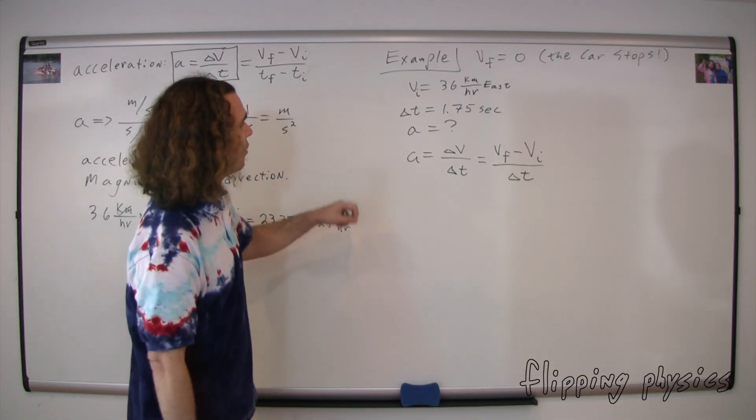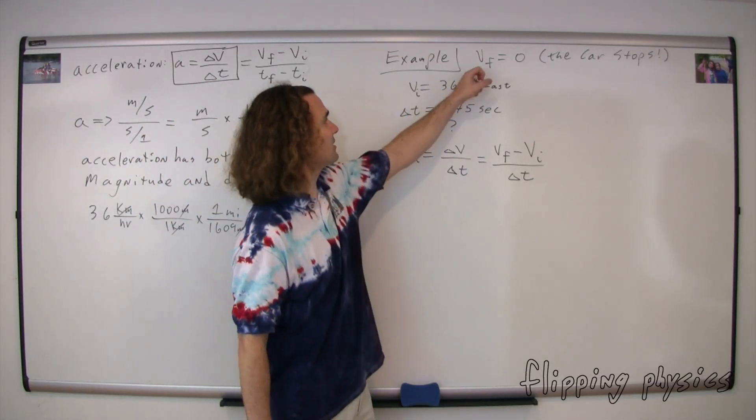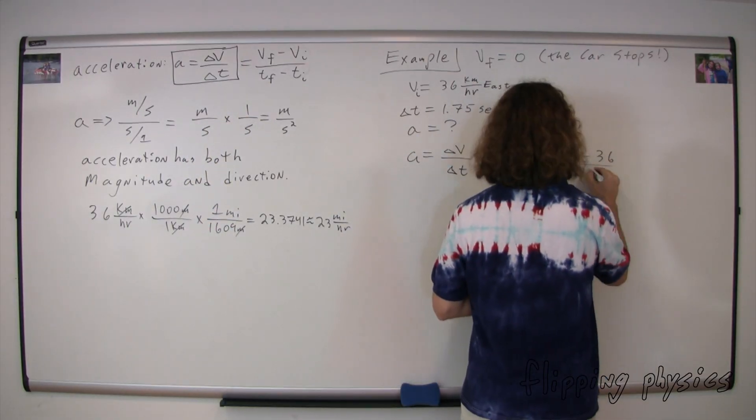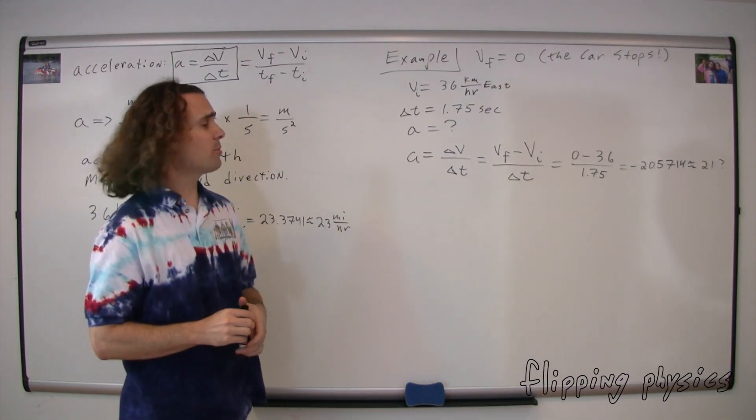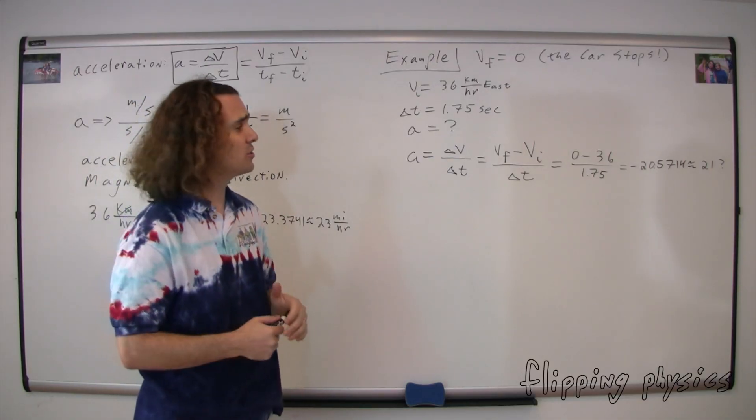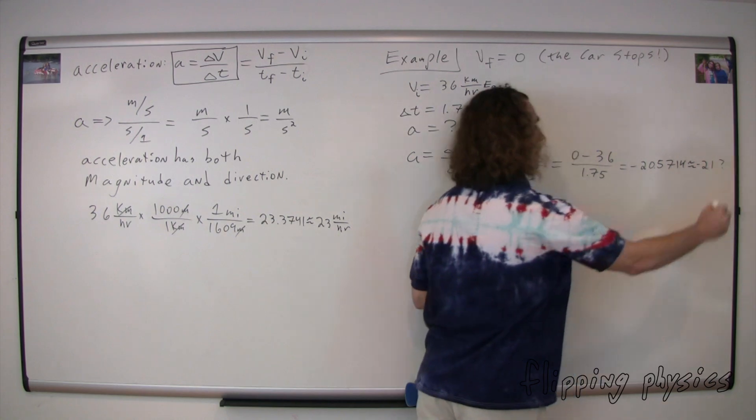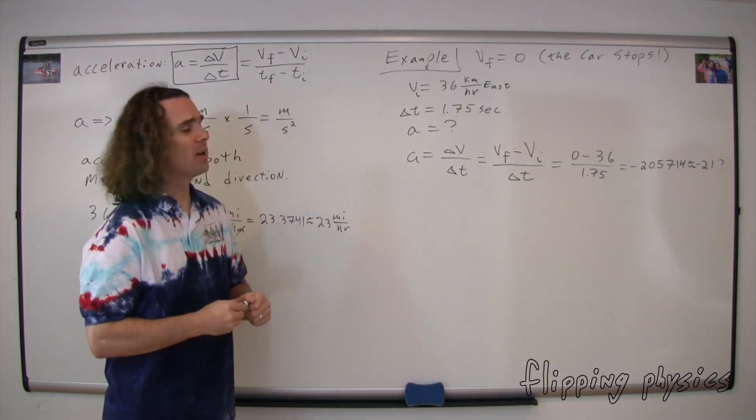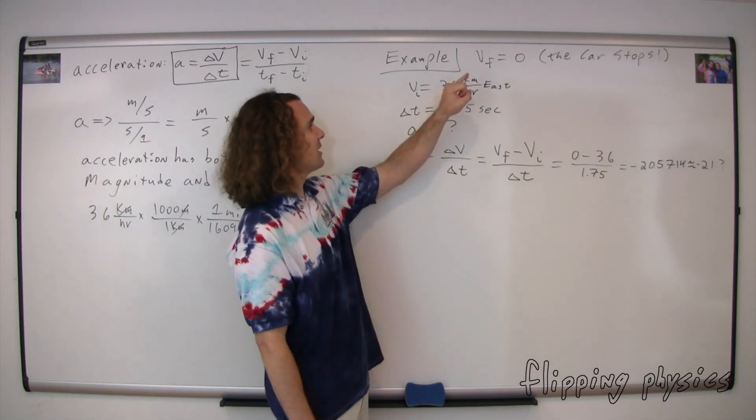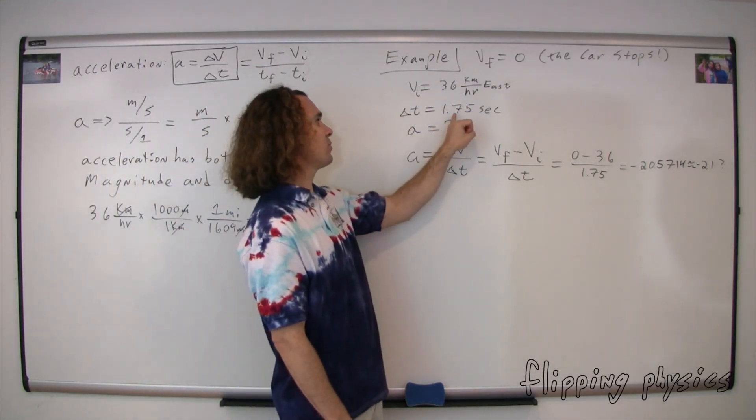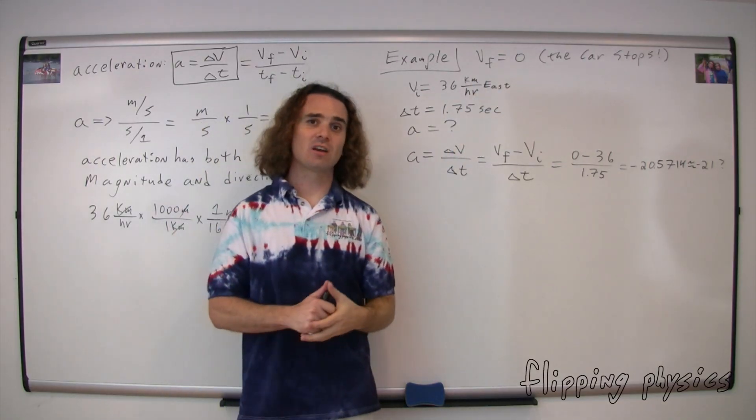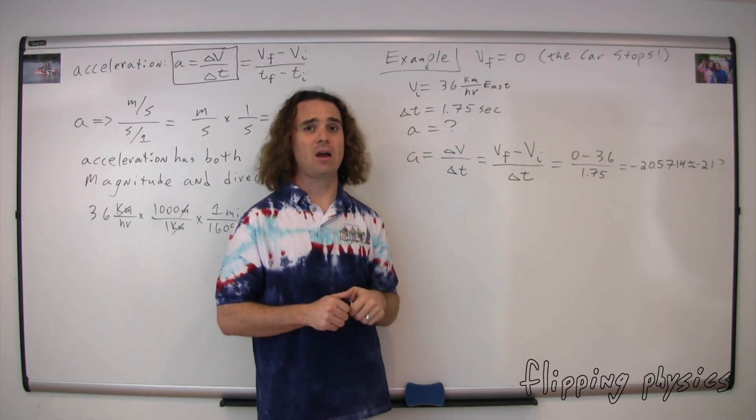Therefore, we need to go back to here, erase this, and substitute velocity final minus velocity initial. Now, if you look at this equation, we know the velocity initial. We know the velocity final. We know the change in time. We can just plug in the numbers. So we can just plug in our numbers at this point. We get zero minus 36 divided by 1.75. Unfortunately, when we do that, we just get the negative of the number we got before, negative 21. But unfortunately, we're going to have an issue with our dimensions. We have 36 kilometers per hour as our velocity initial, and our change in time is 1.75 seconds. So we get kilometers per hour divided by seconds. The dimensions there are going to work out to be kilometers per hour seconds. And that doesn't make any sense.